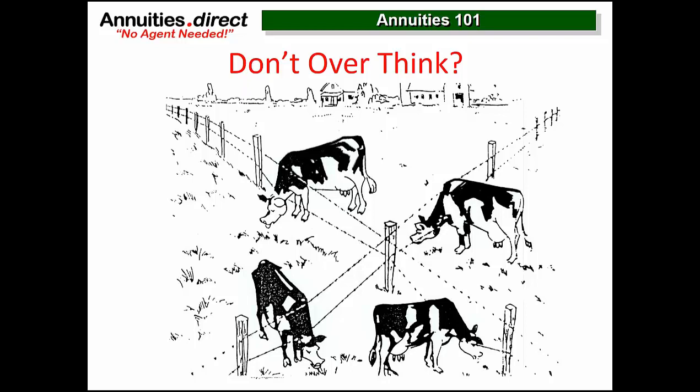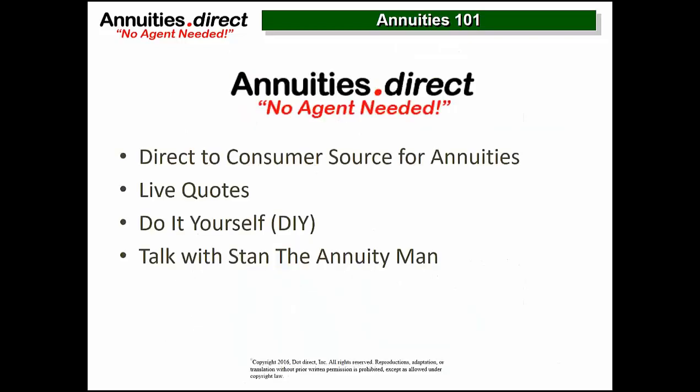These are contractual guarantees. I was telling Jimmy this morning, I really don't even like the word annuity, even though the Romans came up with it. Don't call them annuities — they're contractual guarantees. You should be buying them for contractual guarantees only. Go back to the first slide — annuities 101: what is an annuity?